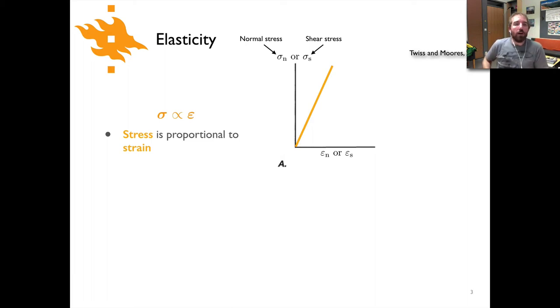So our basic relationship is one that looks like this. We have a stress represented by sigma that's proportional to the strain that's represented as usual by epsilon. You can see that in the plot over here where you have either a normal stress or a shear stress and that's going to be proportional to either a normal strain or a shear strain and it's a straight line on this plot. They are linearly proportional to one another.